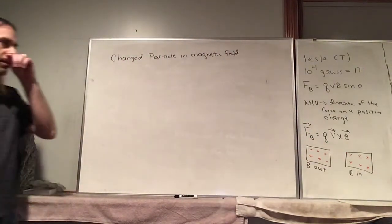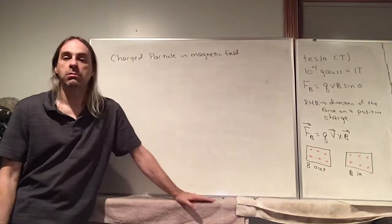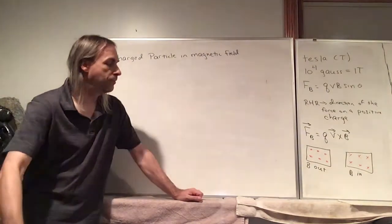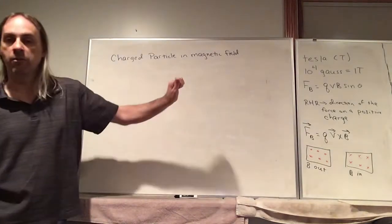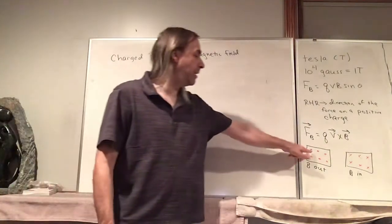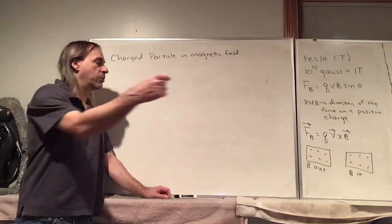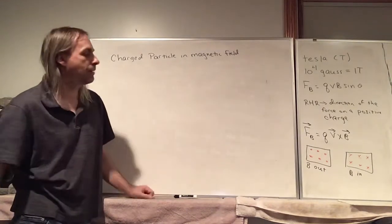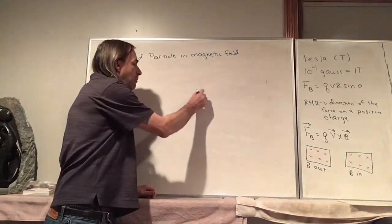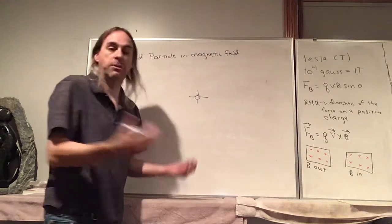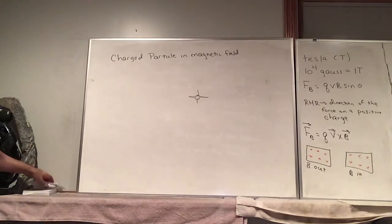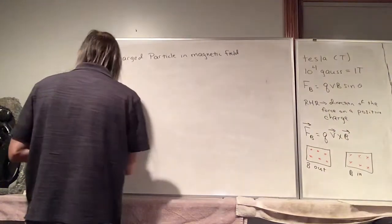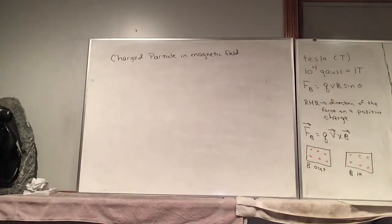A good way to remember that is to think of an arrow, like an actual arrow fired from a bow. If it's coming towards you — coming out of the board — you see the arrowhead, which is a dot. If the magnetic field is going into the board, picture it moving away from you, and you see the feathers on the back, which form an X.